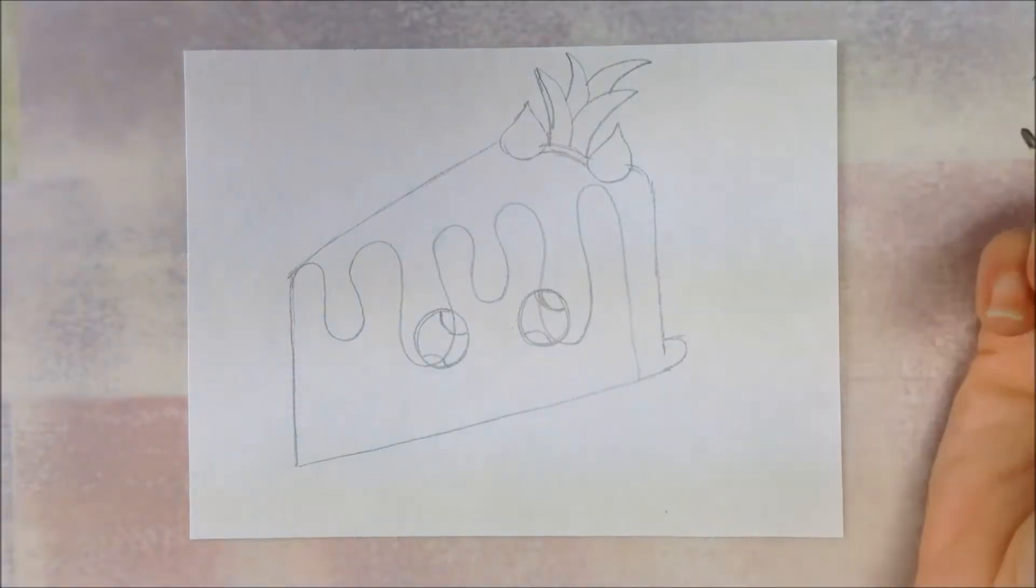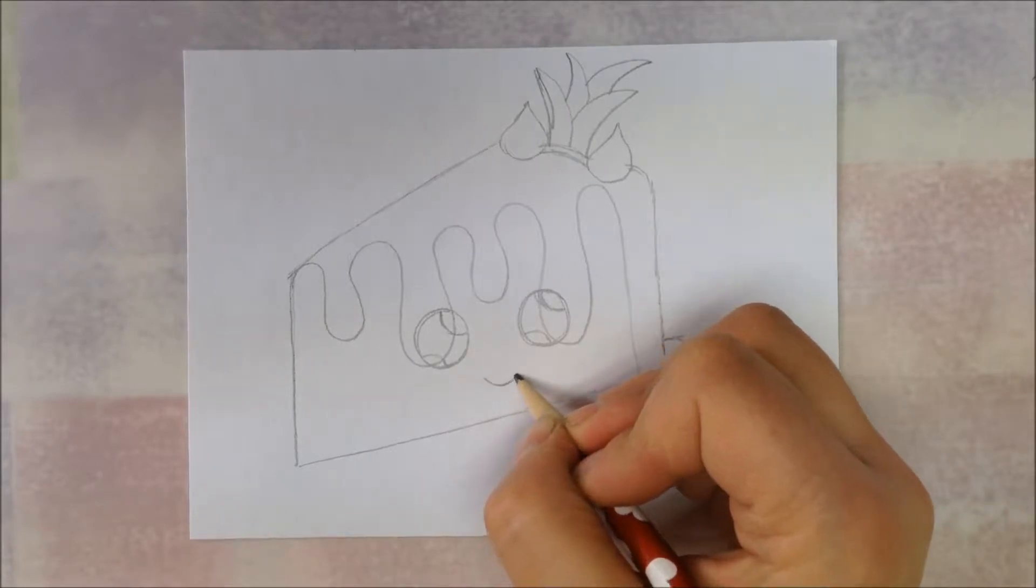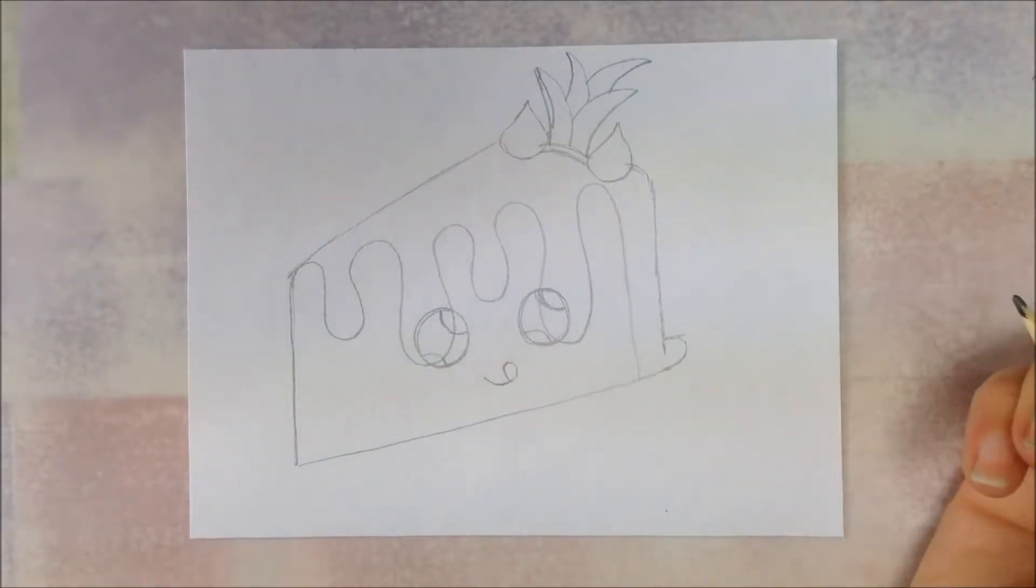I had to go on top of my icing because that's where the eyeballs needed to be. That can be covered with marker later or erased. For the mouth, we're going to do a little curve with a loop so it looks like his tongue is sticking out.